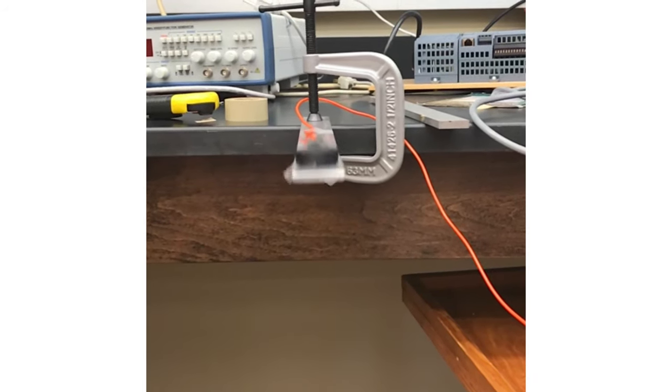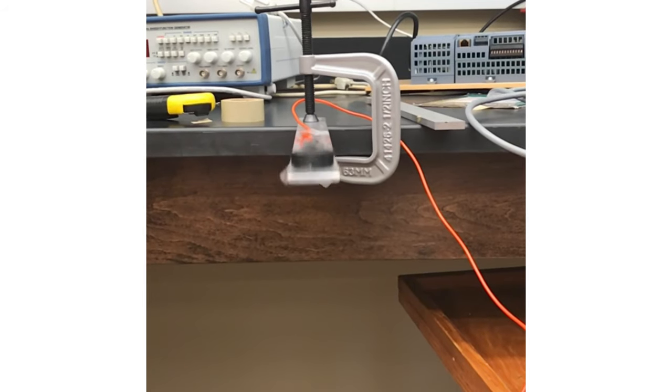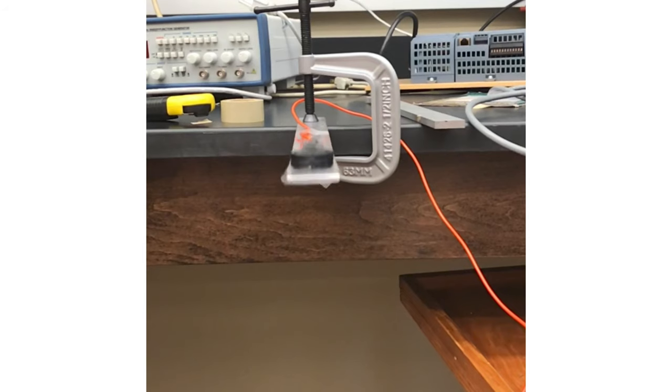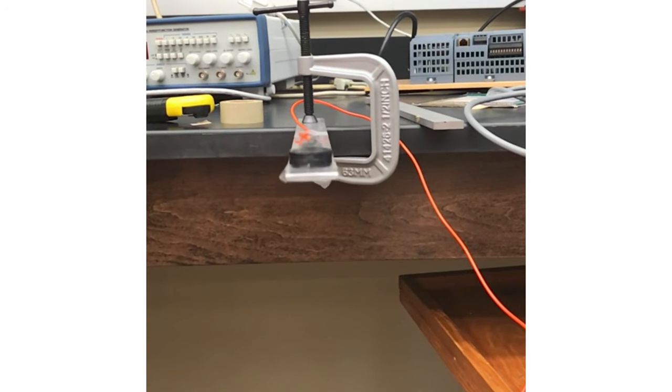Here an aluminum bar is attached to the edge of the table using a c-clamp in the lab. At the end is a black accelerometer attached to the bar using double-sided adhesive tape and connected to a circuit using that orange cable you can see.